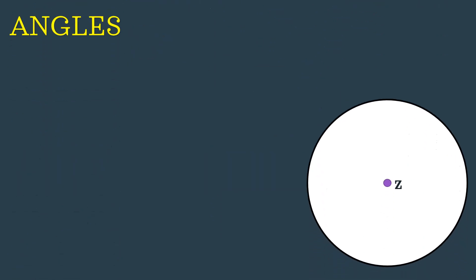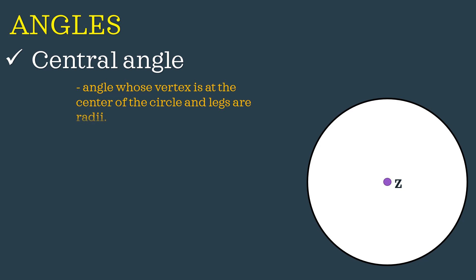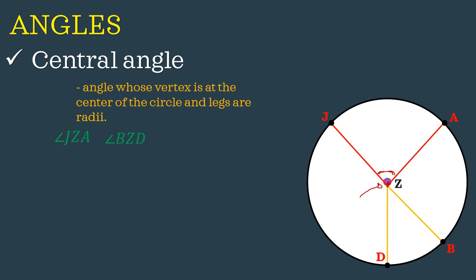Aside from lines, we have angles — two types. The first is the central angle: an angle whose vertex is at the center of the circle and whose legs are made up of radii. The vertex is the common point of the angle. Since our angle meets on the center of the circle, they are called central angles. To name them, we have angle JZA and angle BZD, and also angle AZB and angle JZD — four central angles in our figure.